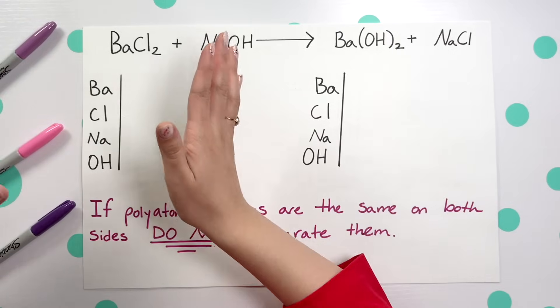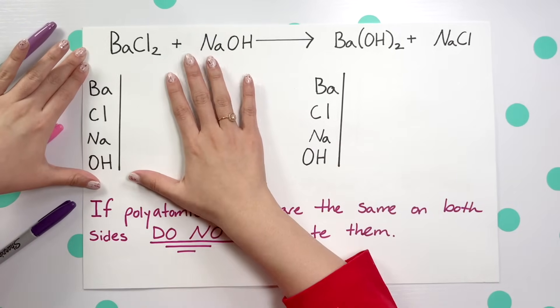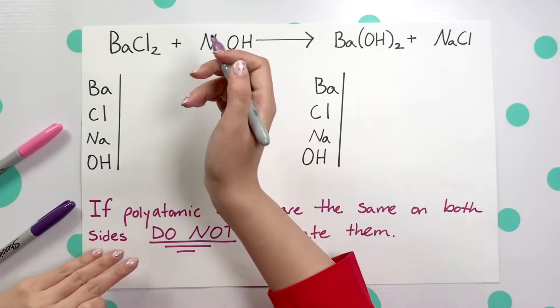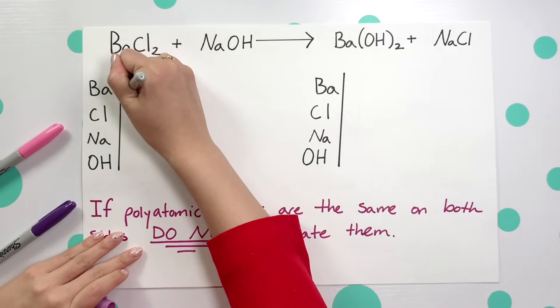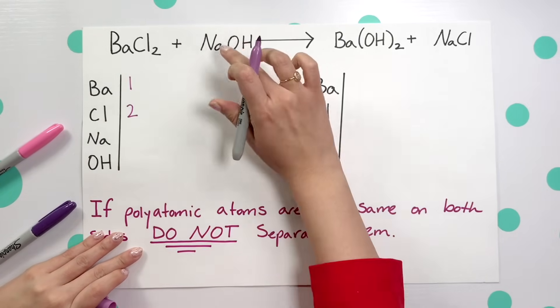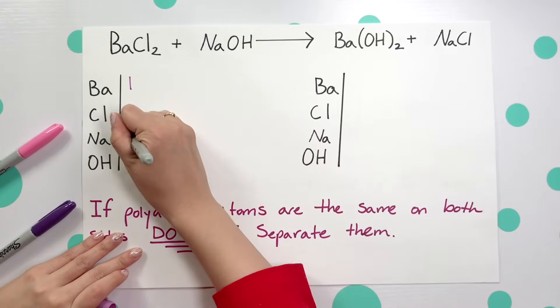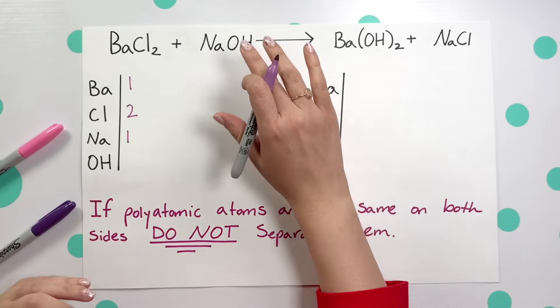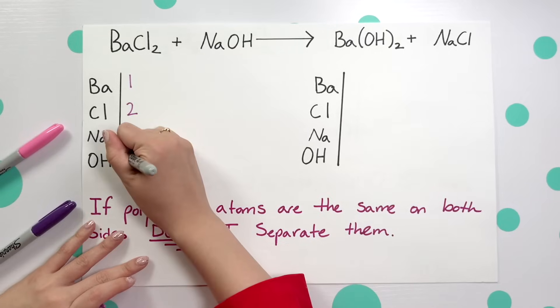All right, so now let's get back to our reactants and see how many of each reactant we have. Looking at barium we only have one. Chlorine, this subscript tells us we have two, and Na we only have one. OH has no subscript or parentheses with a subscript, so we're just going to say that there's only one OH.